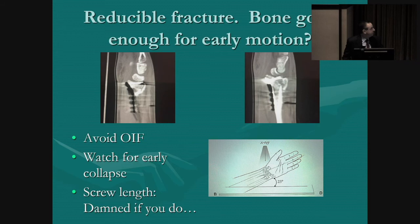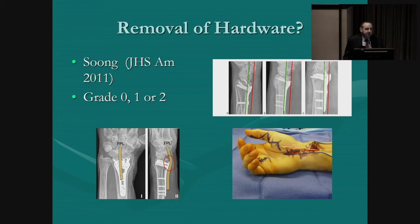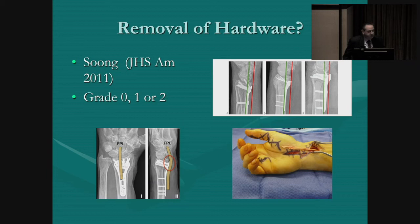What about removal of hardware? Soong classified the location of the plate into grades 0, 1, and 2, depending on where the distal part of the plate falls relative to a line drawn along the volar aspect of the distal radius. The Soong grade 2 plates should probably come out, because if you don't remove them you risk rupturing the flexor pollicis longus tendon. The incidence is not high, but I have seen it as late as five years after open reduction internal fixation — it's a big job to repair that with tendon transfers or a graft.